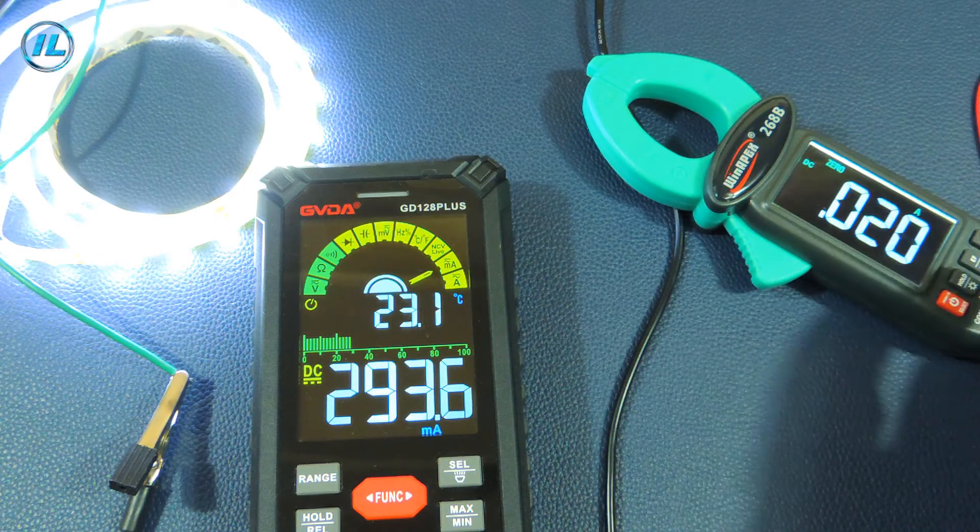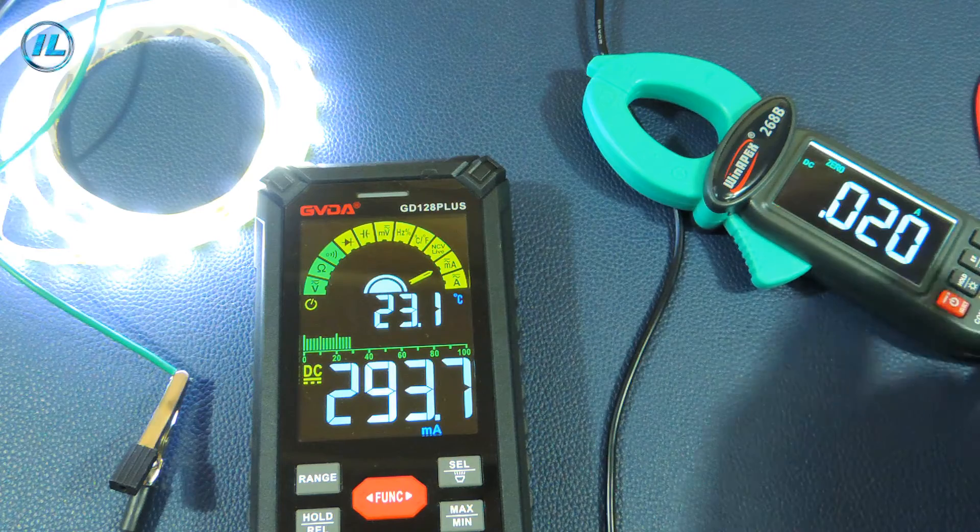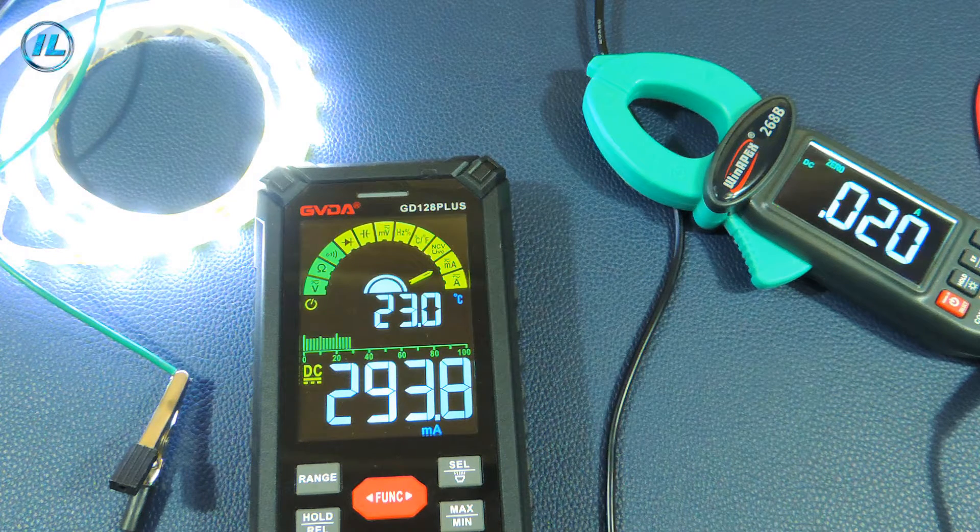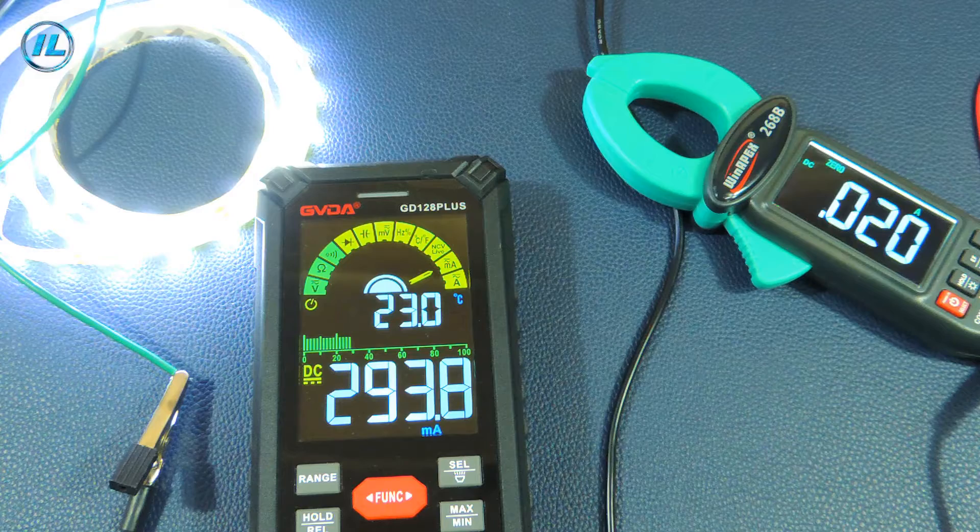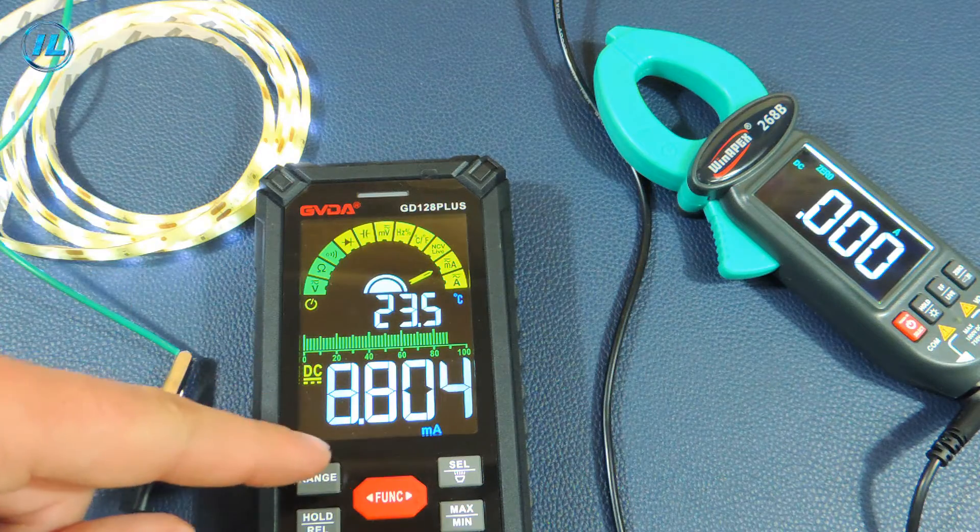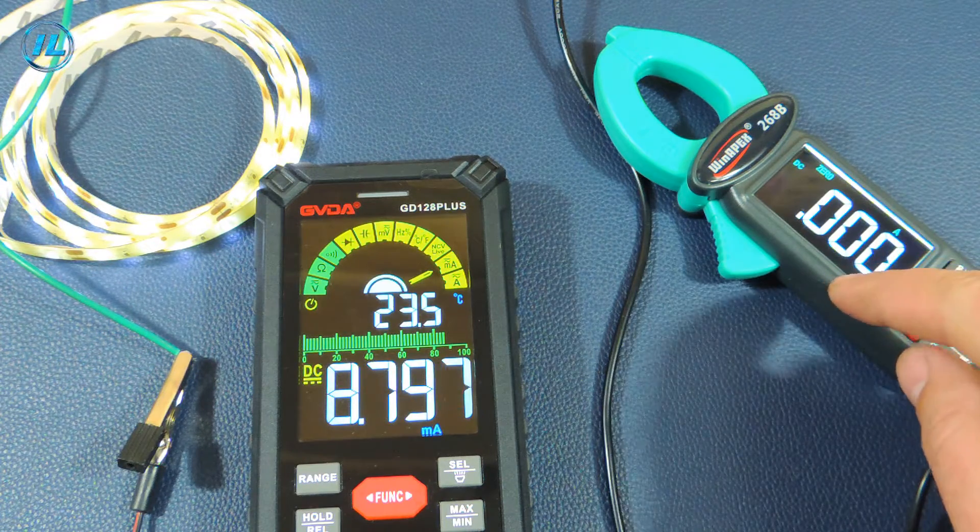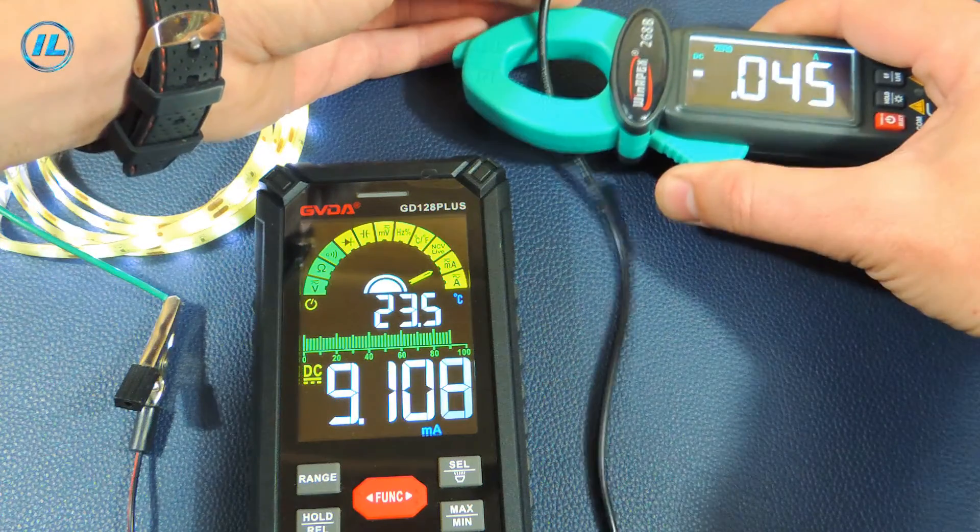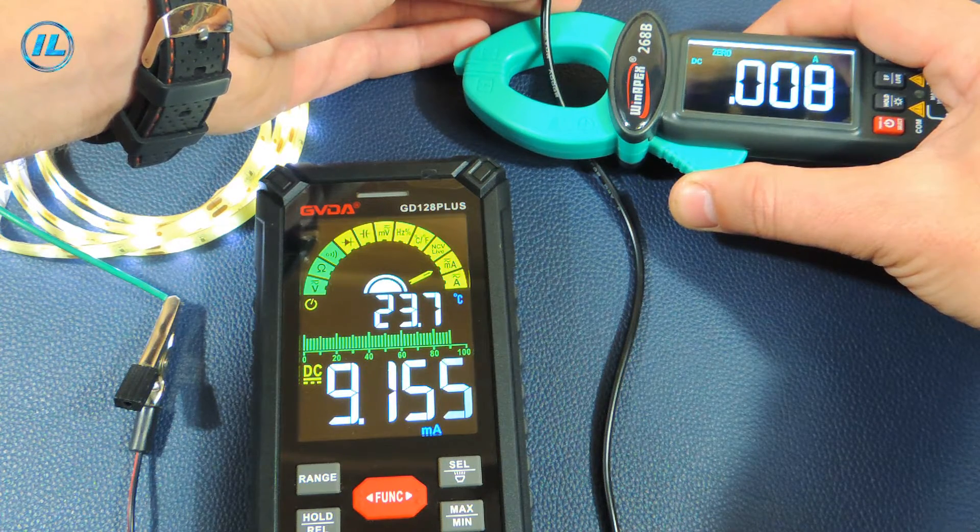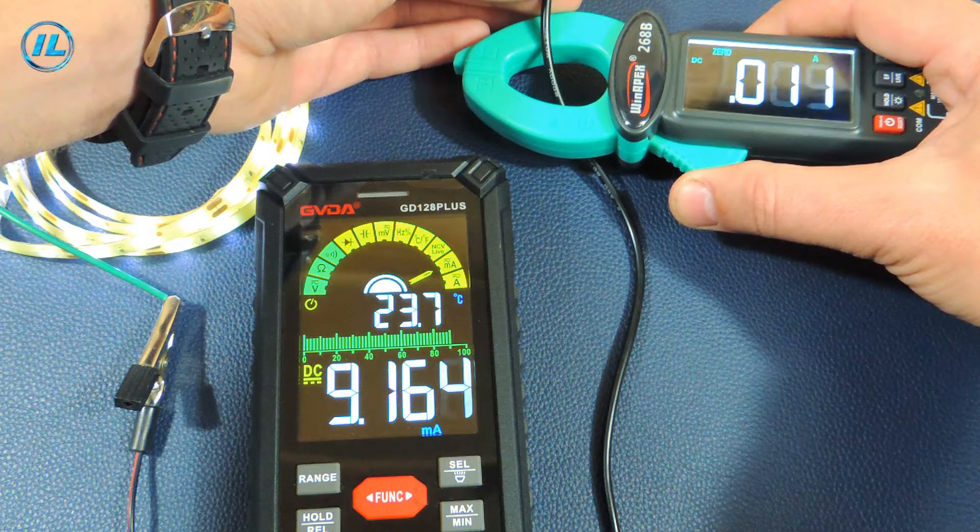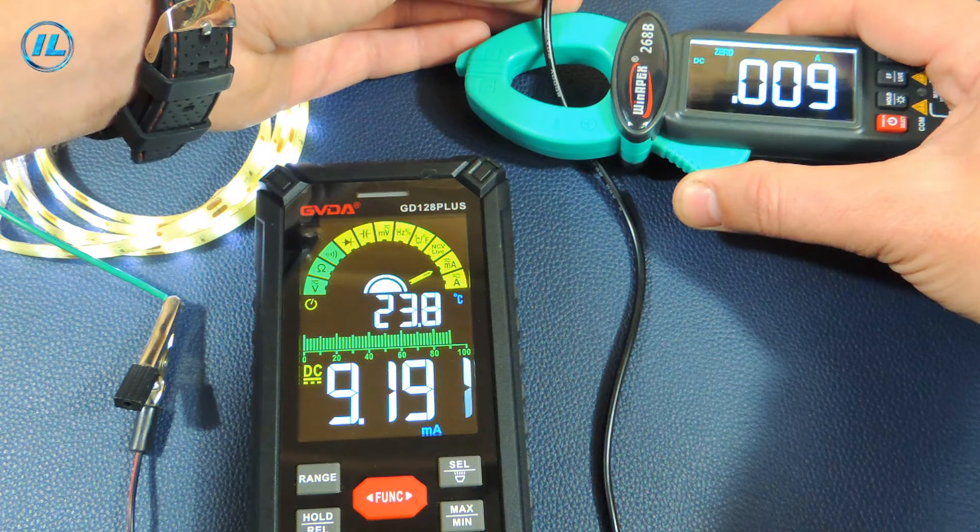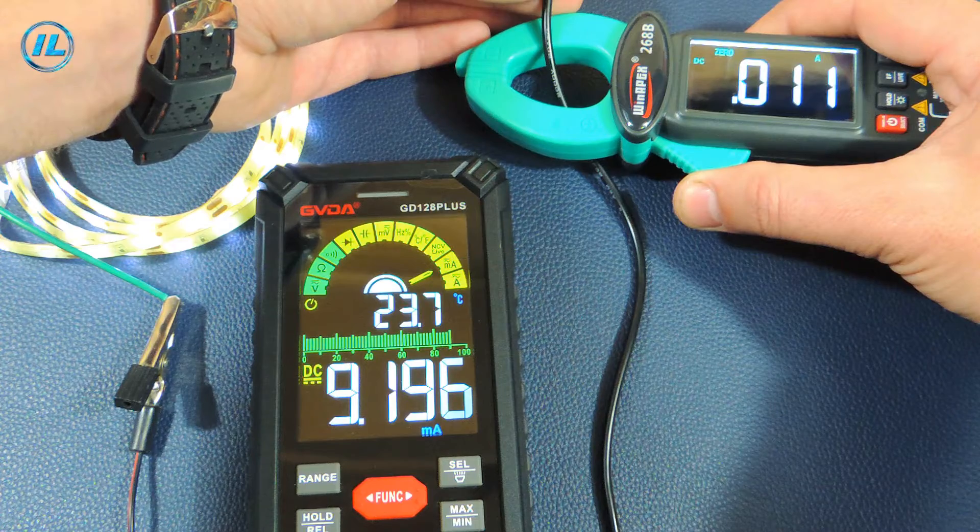At the beginning of this video, I said that these WinAPEX 268B current pliers have a very important function, measuring small currents, starting from 2 milliamps. They can even be used to check the leakage current. Now I will check if this function really works. I have reduced the current on this LED strip to 8 milliamps. Let's see what the current tongs will show. The result is 8 milliamps. Exactly the same result as on the multimeter. Well, the WinAPEX current pliers can really measure small currents and this is a very useful function.